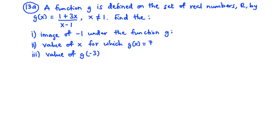A function g is defined on the set of real numbers R by g(x) equals (1 + 3x) over (x minus 1), where x is not equal to 1. Find: i, the image of negative 1 under the function g; ii, the value of x for which g(x) is equal to 7; and iii, the value of g(negative 3).